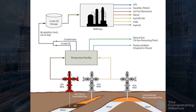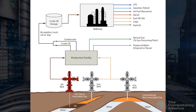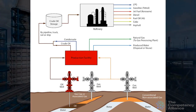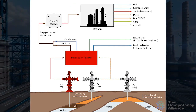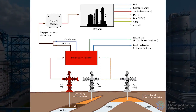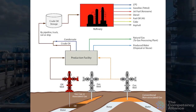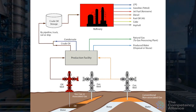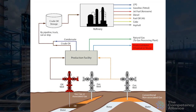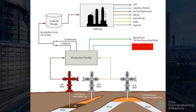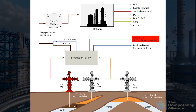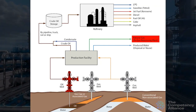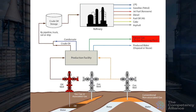We might also have solids, such as sand, in this stream. At the production facility, we first do a bulk separation of the three phases, and we measure the standard volume flow rates. The oil must meet certain sales, storage, and transportation specifications before leaving the production facilities and being converted to valuable petroleum products in a refinery. The produced water must meet disposal or re-injection specifications. The gas stream that leaves the production facility often does not meet specifications because it undergoes further processing downstream in a gas processing plant.